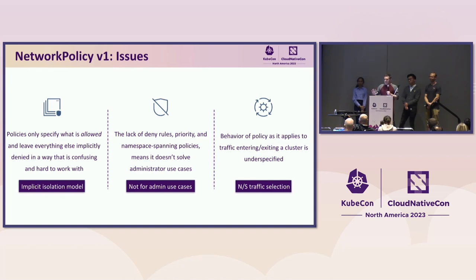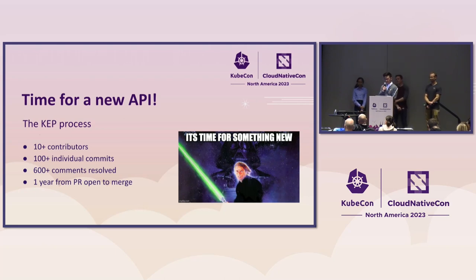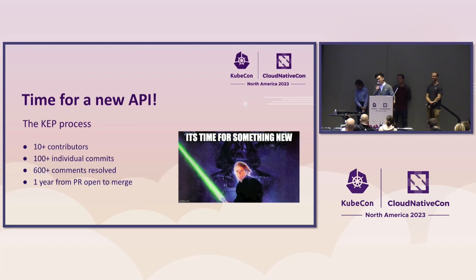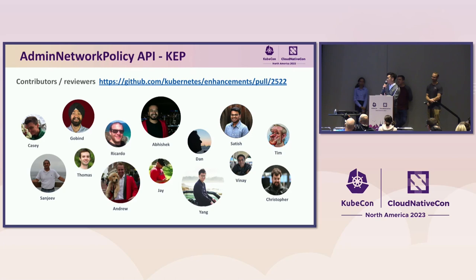So these are all issues — some realized right away, some took a while — and we realized we need to do something about this. Time for a new API. To solve all the problems Dan mentioned, the working group decided to open a KEP. We have 10-plus contributors putting in more than 100 individual commits, resolving over 600 comments. If you look at the GitHub PR, there are just too many comments to unfold and the GitHub page will actually get frozen sometimes. This is just how much effort has been put in to get this KEP merged — which happened one year after it was opened. I wanted to give a huge shout-out to all the contributors to the KEP who made this happen.